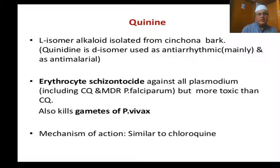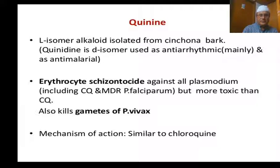The next important drug is quinine. Quinine is more toxic and not safe. Quinine is the L-isomer isolated from cinchona bark and is used for malaria. Quinidine is the D-isomer, used as an antiarrhythmic drug. Quinine is effective against all Plasmodium species, including chloroquine and multi-drug resistant Plasmodium falciparum.